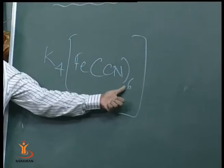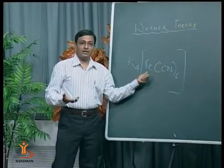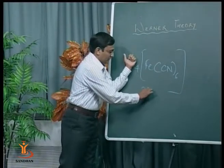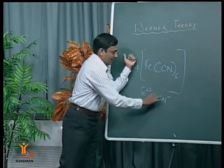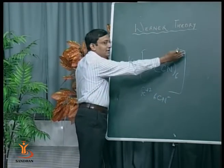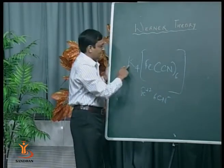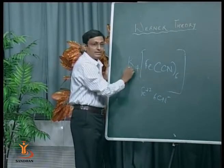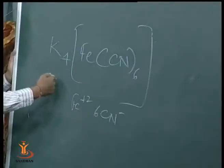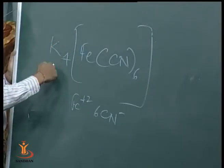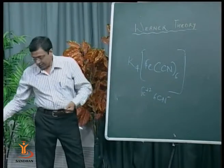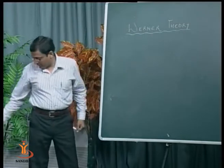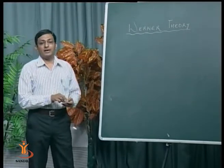Cyano is also a monodentate anion ligand. Here the coordination number is 6, and the metal ion is iron (Fe). The oxidation state of Fe is +2; cyanide has a charge of −1 and is an anion ligand, so the overall charge will be −4. For neutralization, this complex reacts with K₄. Potassium is linked with the complex by primary valency; it is a cation, so we write it in the prefix. These are a few key points of Werner theory.